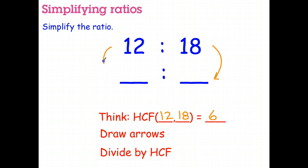Draw arrows on each side. Divide by the highest common factor. So divide six, divide six. 12 divide six is two. 18 divide six is three, and 12 is to 18 simplifies to the ratio two is to three.